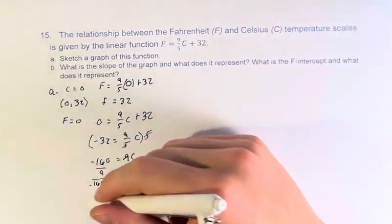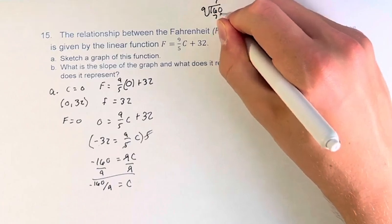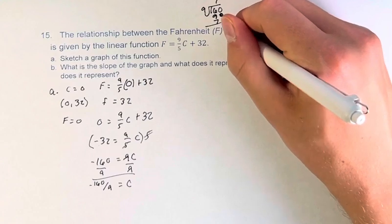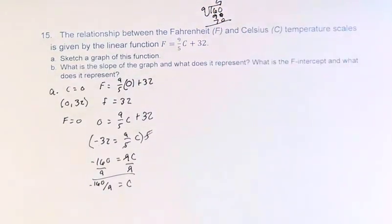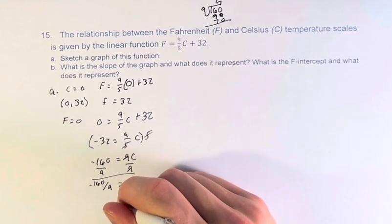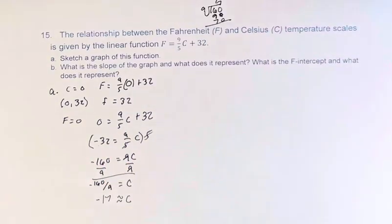Let me write this right here. Just a rough estimate: 160 divided by 9... 9 goes into 70 about 7 times, so it's roughly 17. I'm graphing this as roughly negative 17, because it's going to make it easier to figure out.